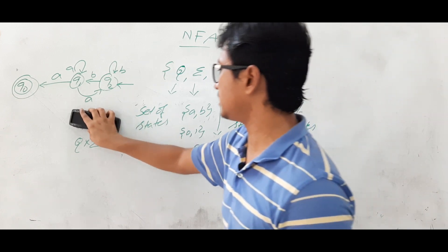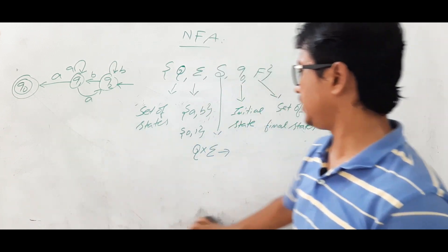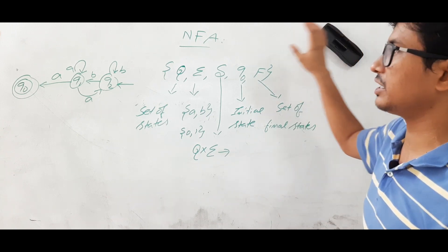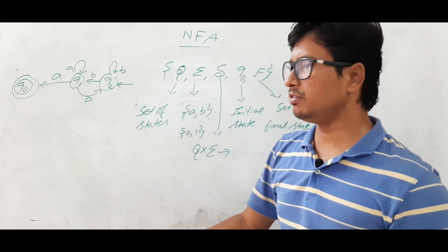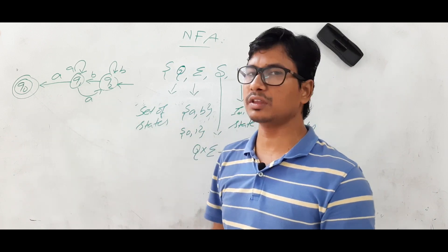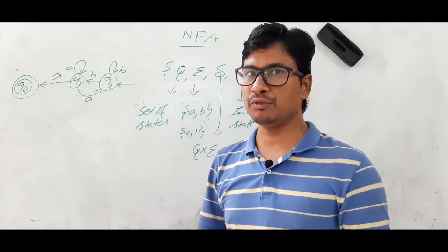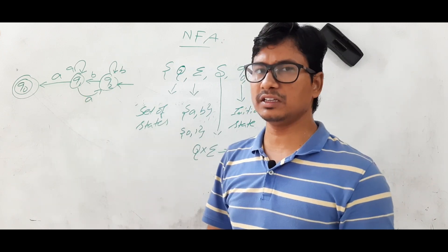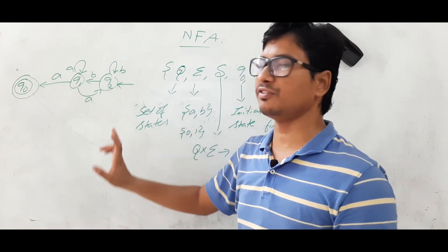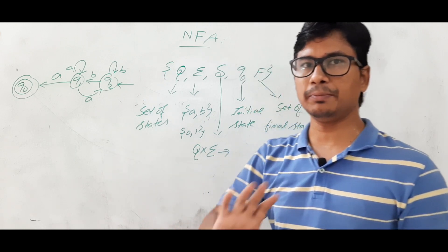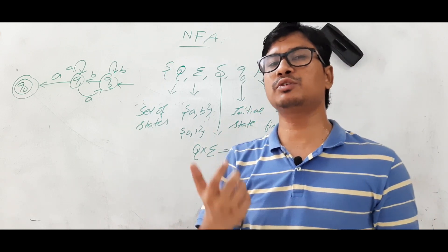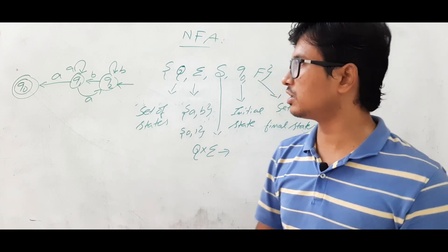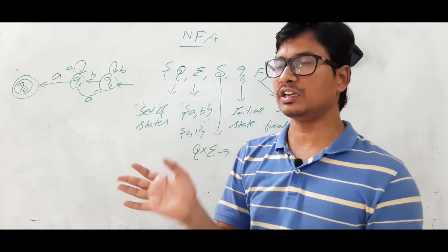In the previous video we discussed the reverse of a DFA. When we performed that reversal, we got a finite automaton. I am not calling it a DFA — it is only a finite automaton. I won't categorize whether it is an NFA or an epsilon-NFA, but I can say it is not a DFA.